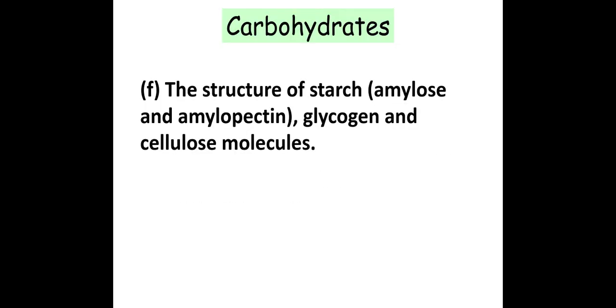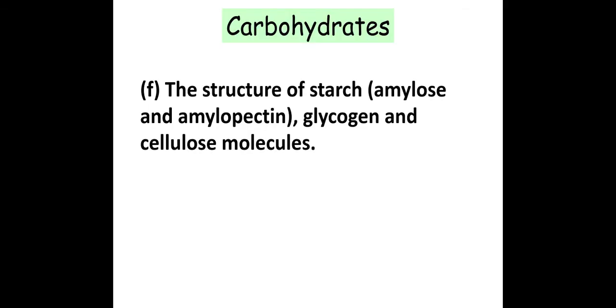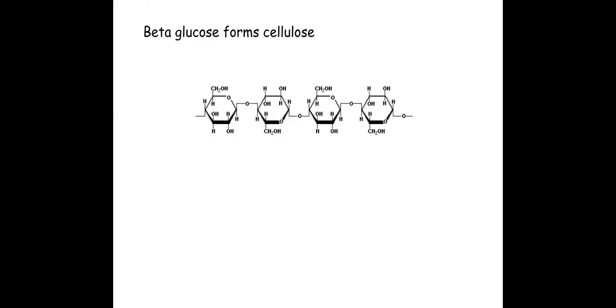The next one is cellulose and cellulose is formed from beta glucose. Now as mentioned before, whenever I've got lots of beta glucoses joined together every alternate beta glucose will orientate itself 180 degrees so that I can get these glycosidic bonds forming.